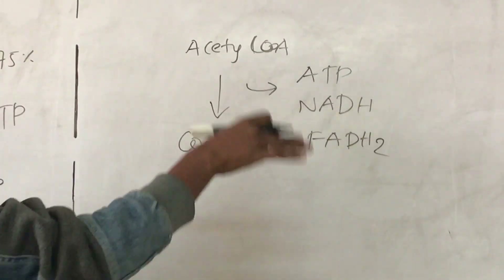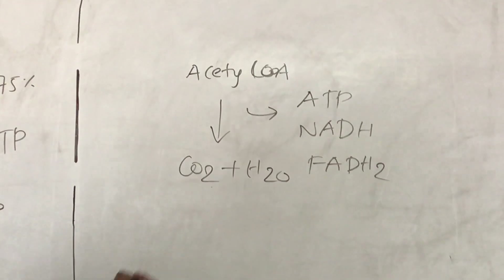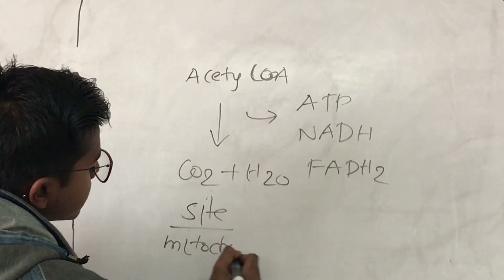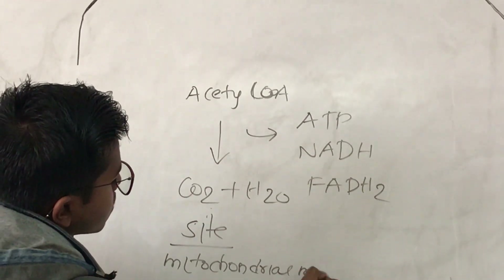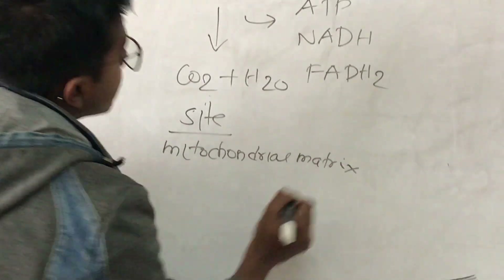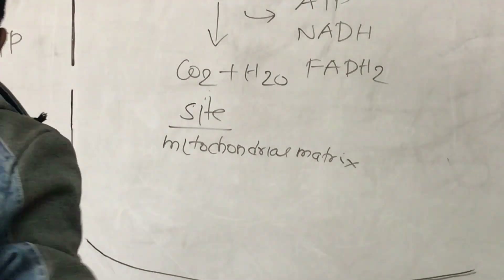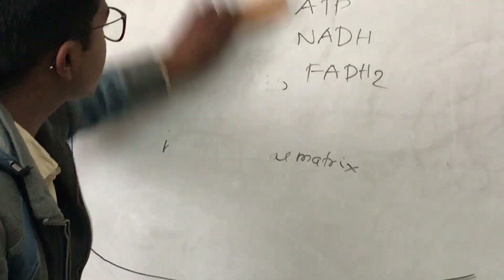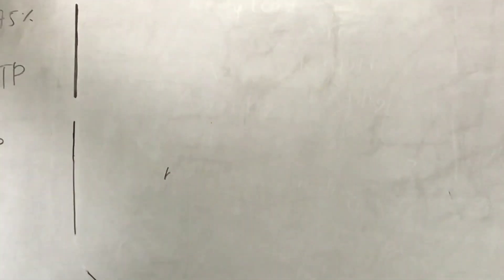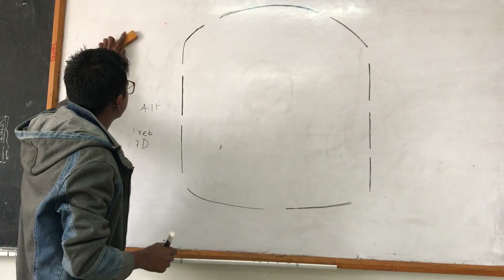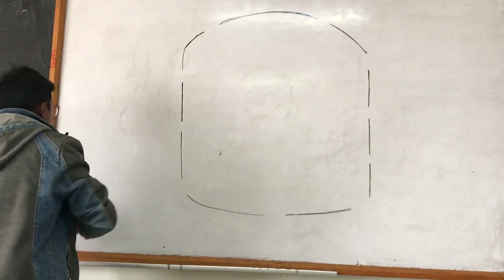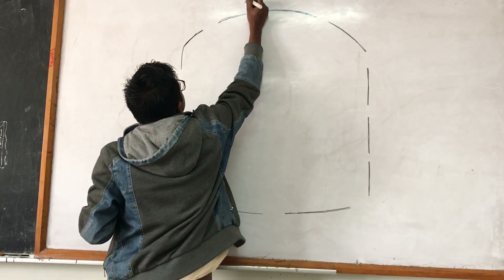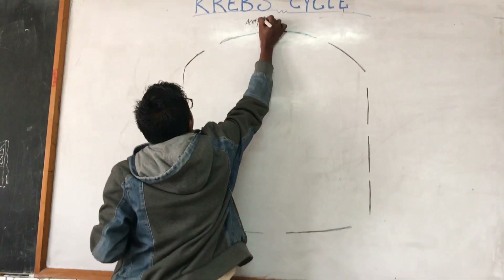This is the overview of the Krebs Cycle. Regarding the site — where does it occur? It occurs in the mitochondrial matrix, so the enzymes necessary for the Krebs Cycle are also present in the mitochondrial matrix. Now going on to the steps: as we discussed glycolysis and oxidative decarboxylation in previous videos, the product of oxidative decarboxylation is the 2-carbon compound Acetyl Coenzyme A.